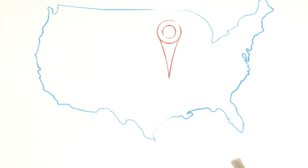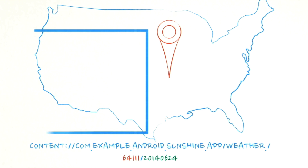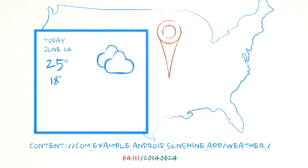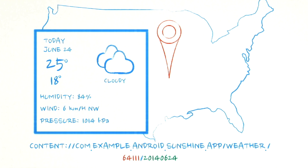Content providers can return all sorts of data, but typically they return either a list of items or a single item. Here's how one might modify our query to select the data for a specific date rather than a range of days, which in this case also contains more information for the viewer to see.